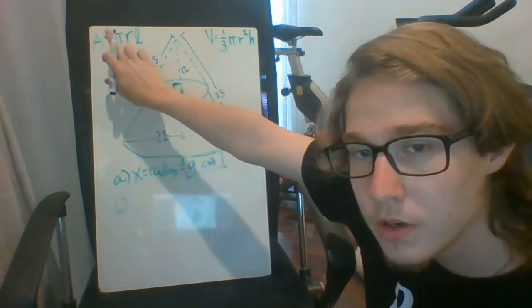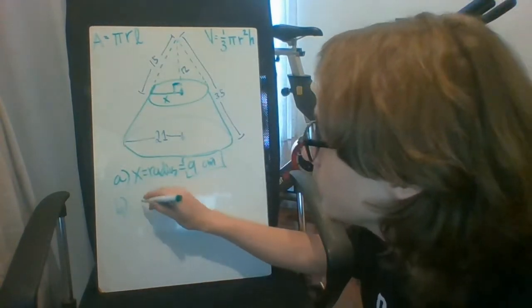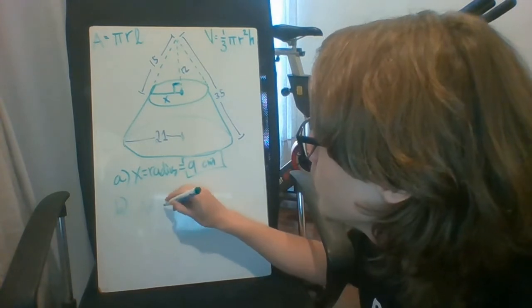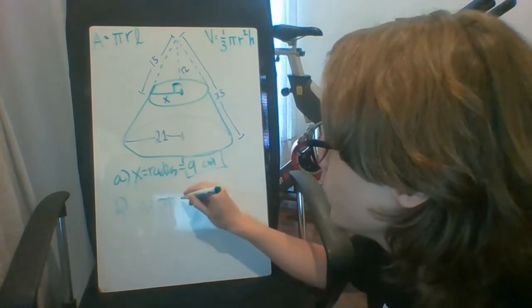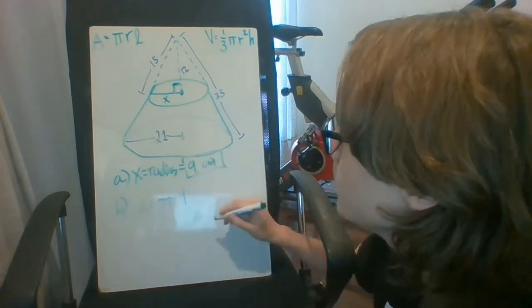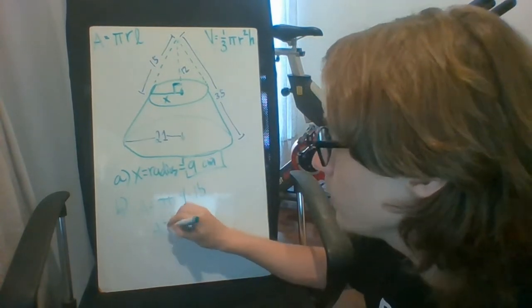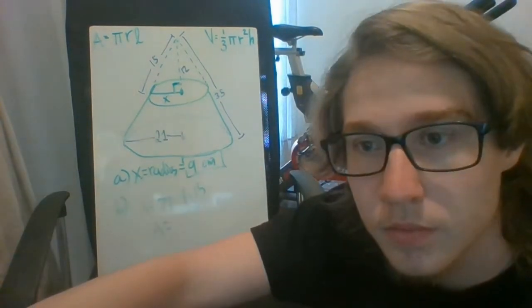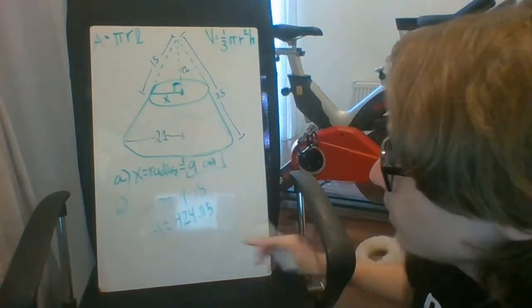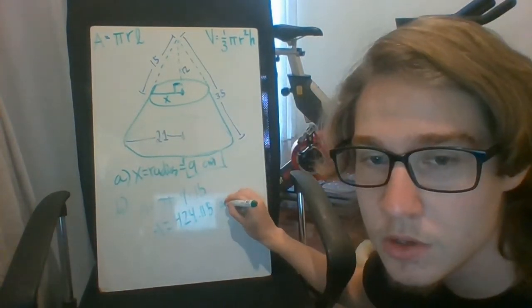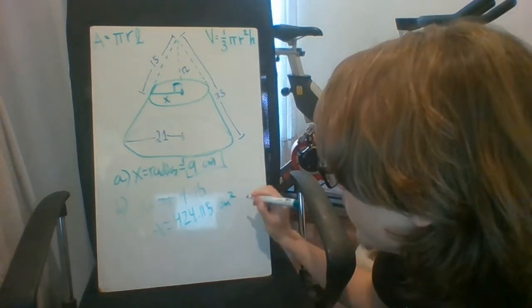So using this formula right here from the booklet, you plug in and have pi times R, which is 9, times L, which they gave us is 15. And this will give us 424.115 centimeters squared.